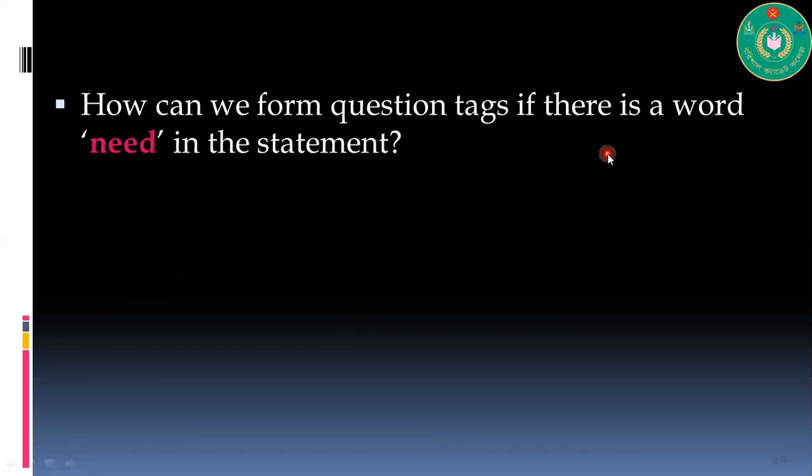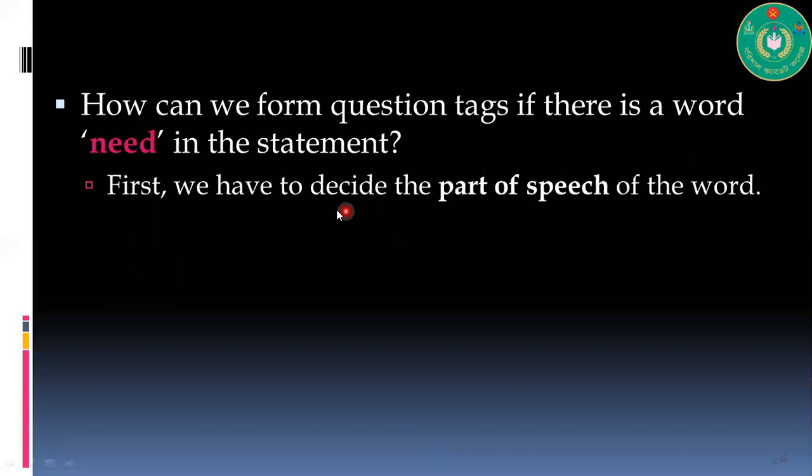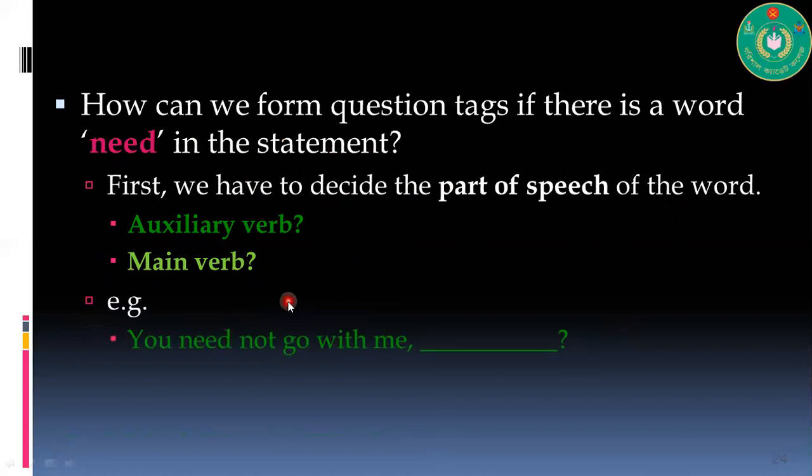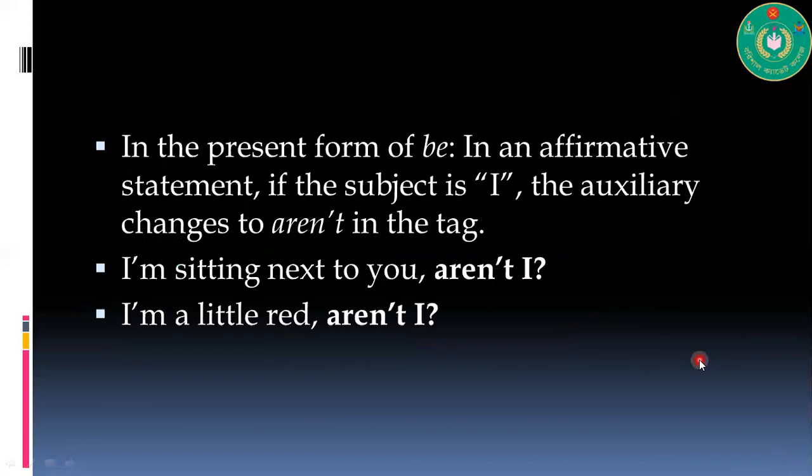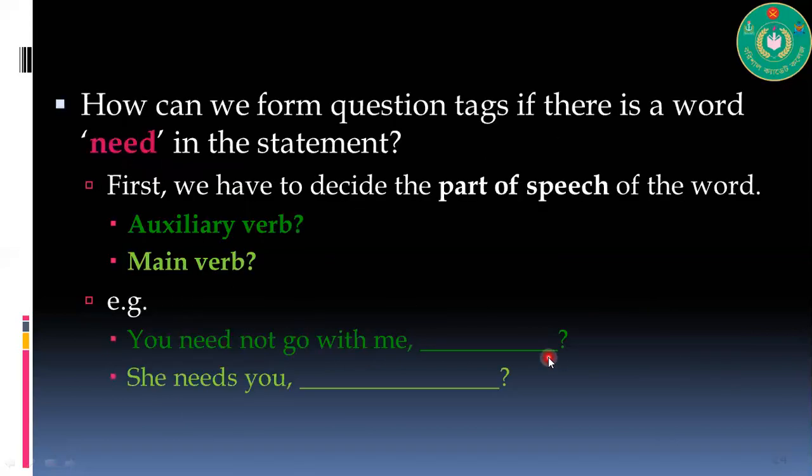How can we form tags if there is a word 'need' in the statement? First we have to decide the part of speech of the word - auxiliary verb or main verb. If need is the main verb: You need not go with me - what would it be? Is it auxiliary verb or main verb? Based on that, she needs you - this is the main verb. And here it's auxiliary verb. So the tag question will change on the basis of their use.